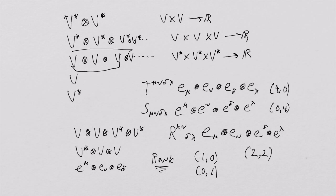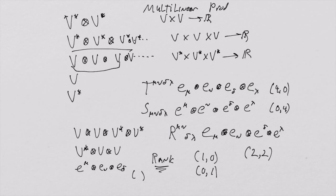So when you see a rank described, you always understand the first number is the number of vectors in your tensor, and the second is the number of covectors. It presumes that vectors come first and covectors come second. An object where a covector comes first cannot be written using that rank convention — that's not the standard. So we don't call those tensors. However, understand that everything here is a multilinear product. No matter what they look like, they are all multilinear products, and they all operate as maps in exactly the same way.